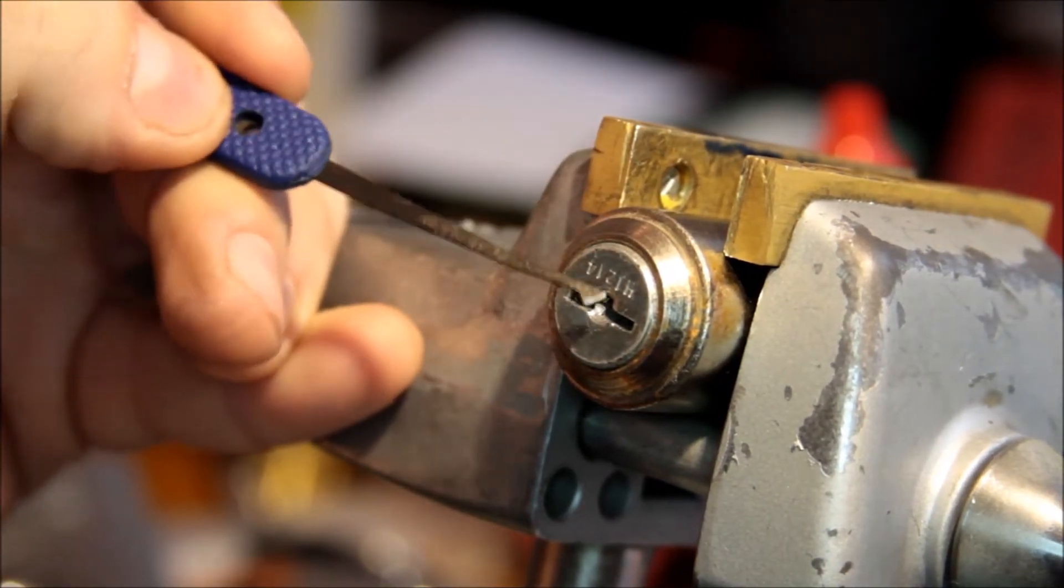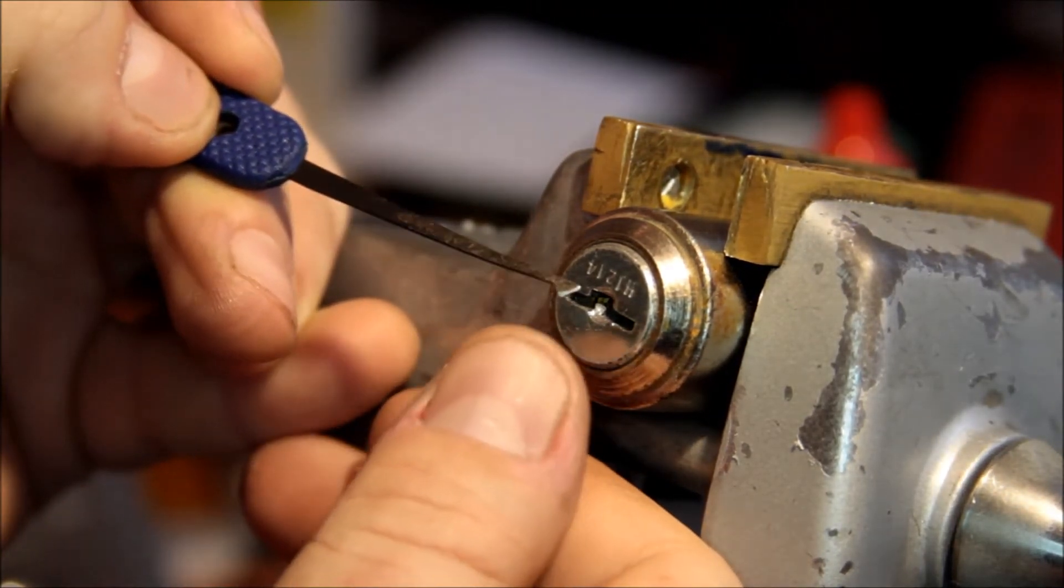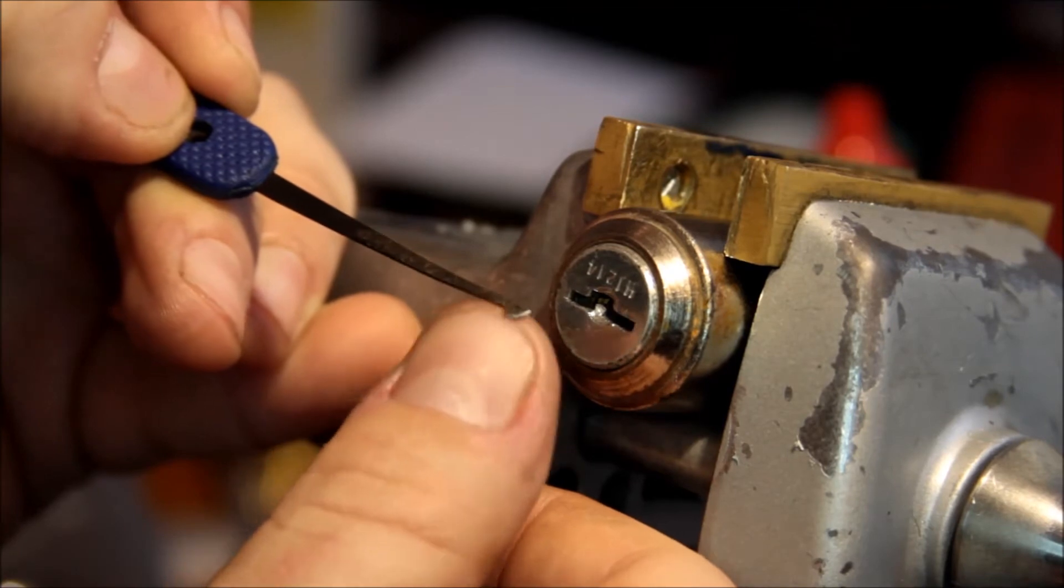Actually, the diamond is probably not quite the right tool because the wafers are thin, and it kind of—like you saw on that front one I was working on when it made the big click—it wants to slip off.